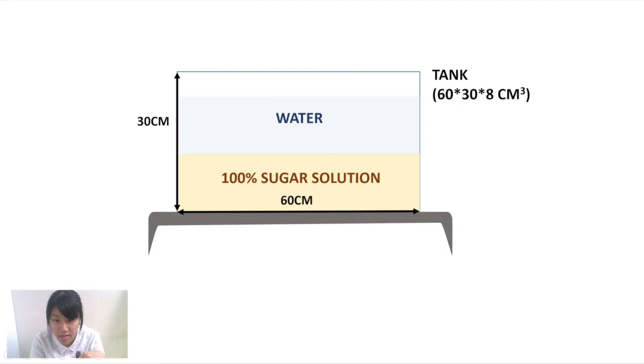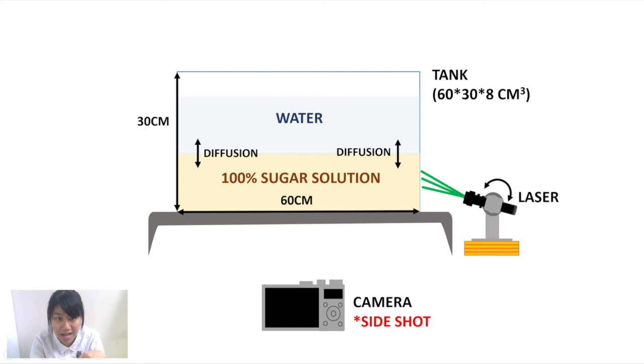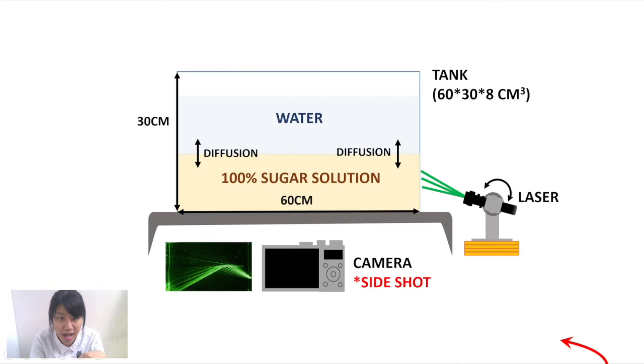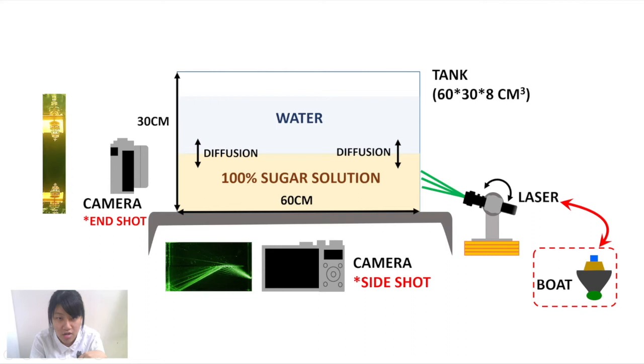We fill the tank with saturated sugar solution at the bottom and water at the top to set the stage, as the diffusion between these two materials will create a dramatic variation of refractive index in the diffused area. Then, we shot beams of laser from the side of the tank to observe the paths of light as they travel through the media. We also put a model boat at the inside of the tank and use a camera rod to take shots from the other side to observe the images of mirage.